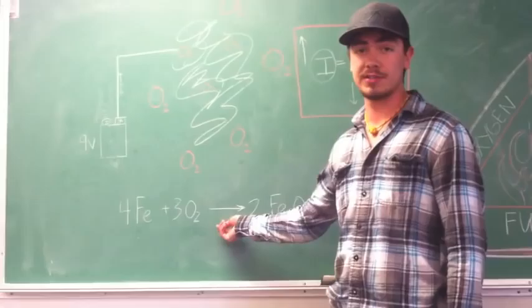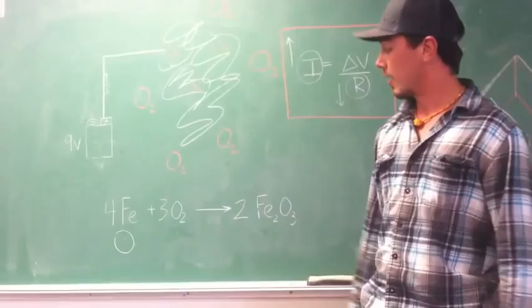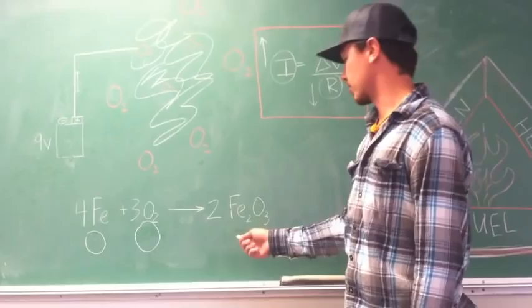So now we're going to talk about how this oxidation works. So here we have just solid iron, which has an oxidation state of zero. Then we have our gaseous oxygen, which is surrounding it, as John mentioned, and that has an oxidation state of zero.